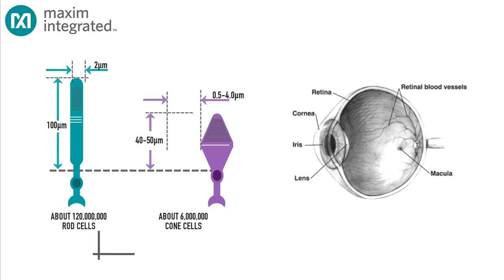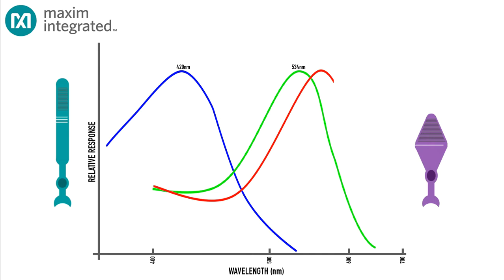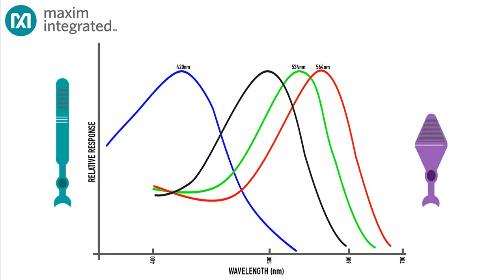The cones are responsible for color vision and are tuned to distinguish just three colors: a short wavelength color centered around blue, a medium wavelength color centered around yellow-green, and a long wavelength color centered around orange. The rods detect only a relatively narrow band of color centered around bluish-green,